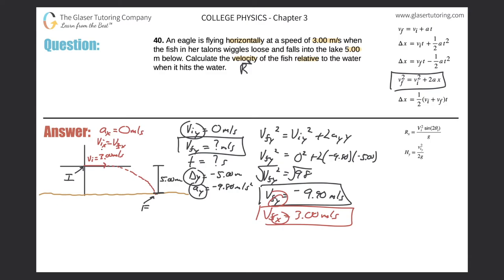Now we have both components — x and y — and can solve for the resultant velocity. Let's draw a coordinate system and plot the components: the x-component is 3.00 meters per second, and the y-component is negative 9.90, pointing downward. The resultant vector connects the start to the end of those two components.